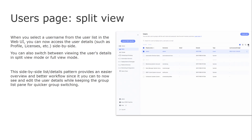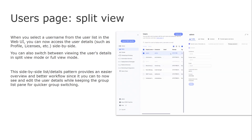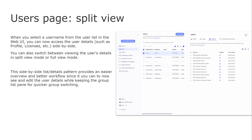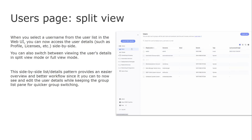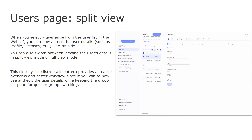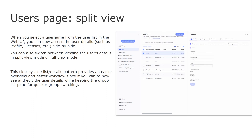On the administration side, when you select a user name from the user list in the web UI, you can now view user details such as the profile, licenses, etc., by splitting the view between the list of user names and the user details. You can also switch between viewing user details in split view mode or full view mode.